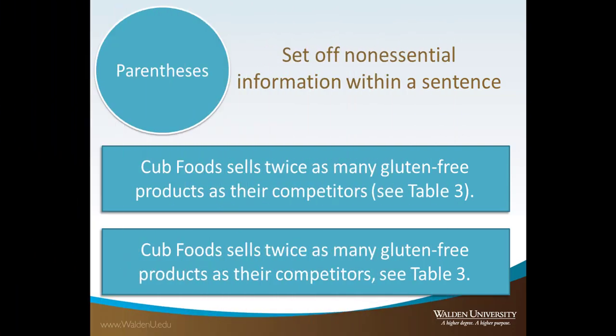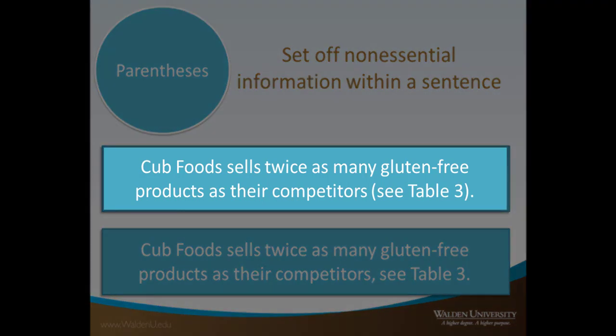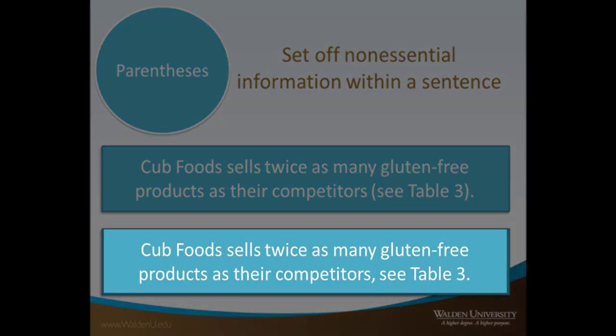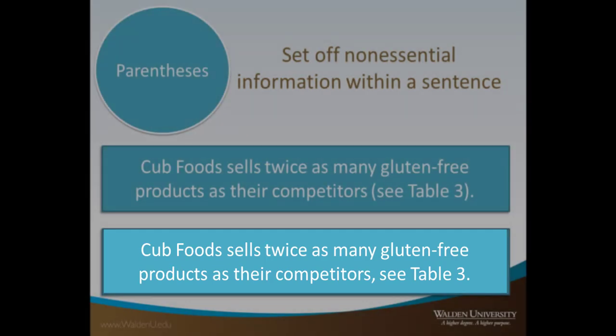Parentheses set off non-essential information within a sentence — information that is not relevant to the meaning of the sentence but might be helpful to the reader. Parentheses are also used in APA style for citations. This example is correct because the extra information is set off in parentheses. This example is incorrect because the non-essential information is only set apart by a comma.